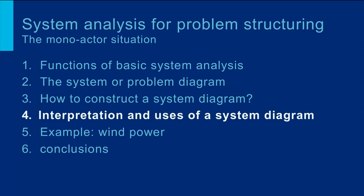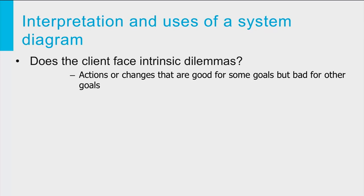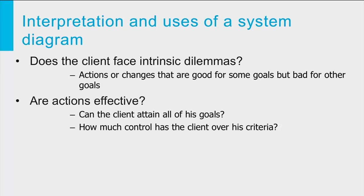What can you learn from a completed system diagram to sharpen your understanding of the problem situation? First, you may find intrinsic dilemmas — are there any actions or changes that are always good for some goals but bad for other goals? The presence of such dilemmas indicates that the client will have to make difficult trade-offs. Second, you can get a first idea about the effectivity of the client's actions and whether, in theory, the client can attain all of its goals — perhaps the client's influence is only minor and other factors or actors will have to be involved.